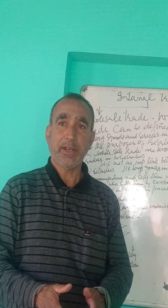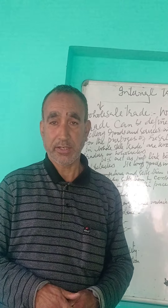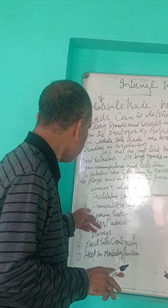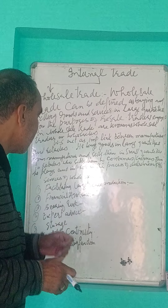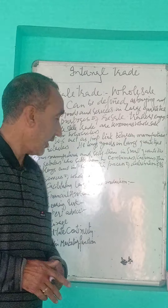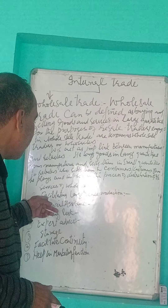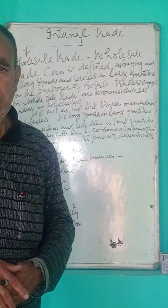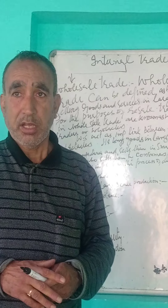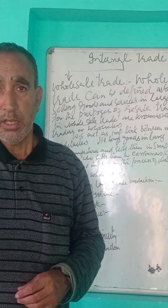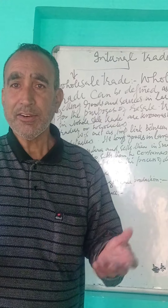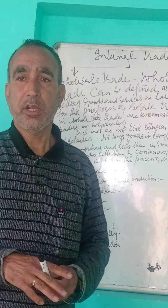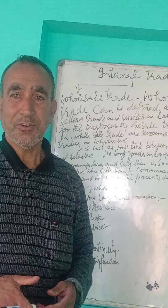The middleman is called the wholesaler. Now, what are the functions of wholesalers? The first function is facilitating large-scale production. When the manufacturer is in the factory, if customers don't get goods then manufacturers can't produce more.